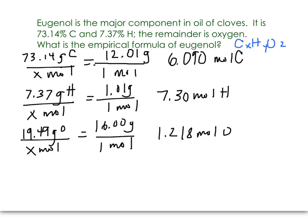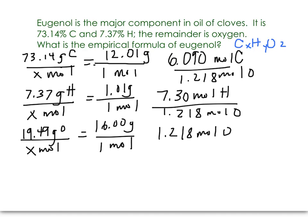When we want to do our mole ratios with three elements, we're going to still divide by the smallest, but we're going to have to do this twice — divide by the moles of oxygen for both carbon and hydrogen. You'll get a 5 to 1 ratio and a 6 to 1 ratio, which are whole numbers. So when we write our empirical formula, we get C5H6O.